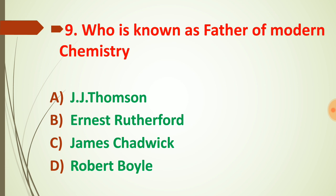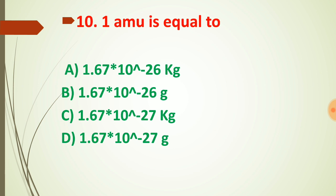Question number ten: electrons, protons, and neutrons are very small, so we cannot measure them in kilograms. We use a standard unit: 1 AMU, also written as 1 u, which is equal to 1.67 × 10⁻²⁷ kg. The full form of AMU is Atomic Mass Unit, and we measure small particles in terms of AMU.